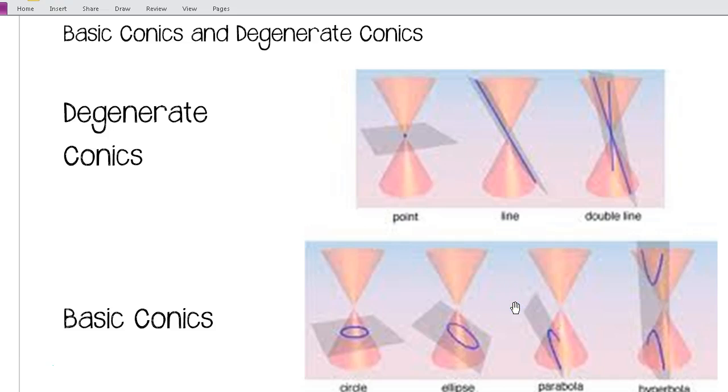So, this first set that we have here, these are degenerate conics. For the first one, if our plane cuts right through where these two cones intersect, we would simply get a point.